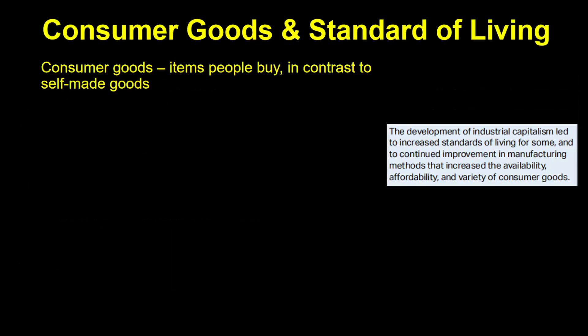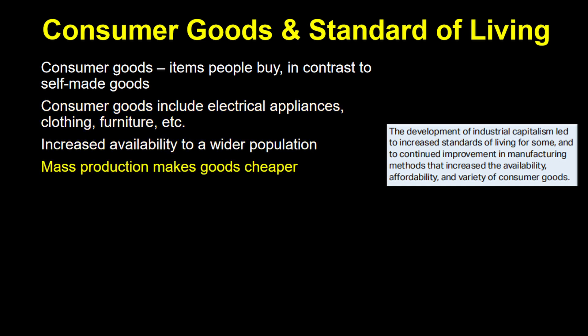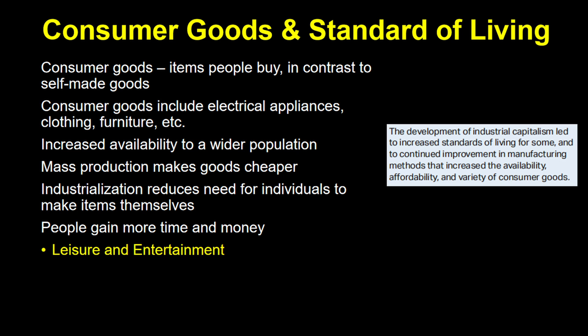The last piece of 5.7 is about the effects of industrial capitalism on consumers. Consumer goods are goods that you buy, as opposed to stuff you make yourself, which people used to do much more before industrialization. Electrical appliances, clothing, furniture, and many more things became increasingly available to a wider amount of people, made cheaper by mass production. This also meant people didn't have to spend hours making the items they needed, so many had both more time and more extra money for leisure and entertainment. All these things combined led to an increase in the standard of living for some, though for many others in the industrial world, life was not so great — it all depended on one's social class.